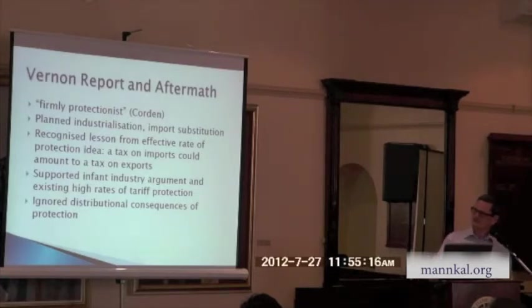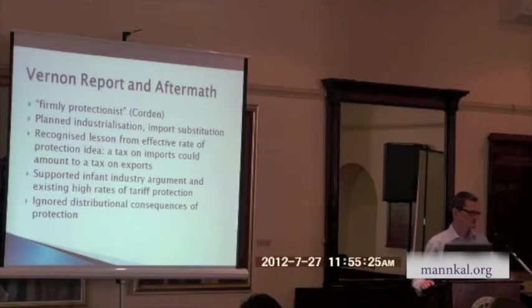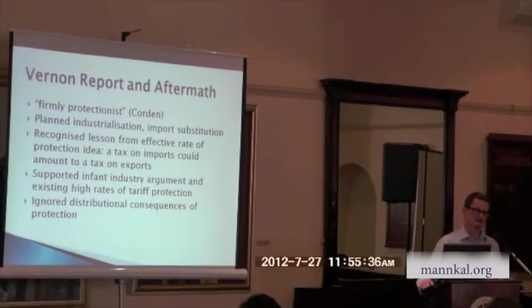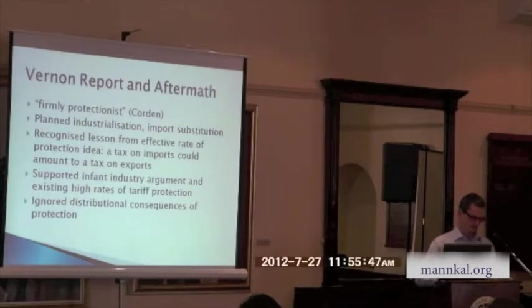They supported the infant industry case — after all, Australia was considered a genuinely developing country in the 1960s — and they supported high rates of tariff protection because planned industrialisation was the way to go. That helped preserve foreign exchange. The distributional consequences of protection, especially on exporters and on low-income households, were largely ignored. That comes later, in the 1980s, when economists turned their attention to the effects of protection on different classes in society.